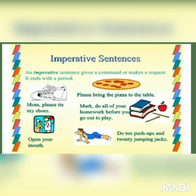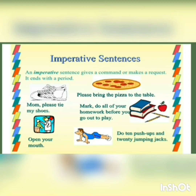The fourth type is the imperative sentence. An imperative sentence gives a command or makes a request. It ends with a full stop and sometimes with an exclamation mark. Examples: 'Mom, please tie my shoelace' — that's a request. 'Open your mouth' — that's a command. 'Please bring the pizza to the table' — a request. 'Mark, do all your homework before you go out to play' — a command. 'Do 10 push-ups and 20 jumping jacks' — also a command.